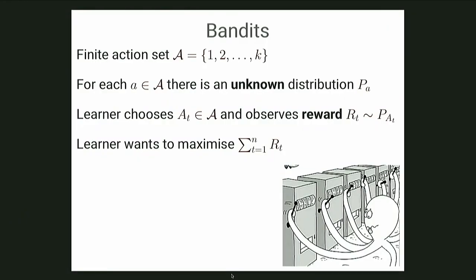Here is the basic setup. You have a game played over n rounds — we call this the horizon. In each round, you choose an action, one of k choices. The set A is 1 through k. After you've chosen your action, you get a reward sampled from some distribution corresponding to the action you took. There are k distributions, which you don't know in advance. Each time you take an action, you get a reward sampled from the distribution that corresponds to that arm. Your goal is to get as much reward as possible over n rounds — it's a finite horizon, and you want to maximize the sum of your rewards. The difficulty is that you don't know those distributions, and this is the only thing that makes bandit problems hard.